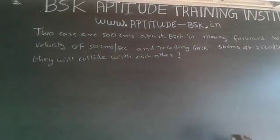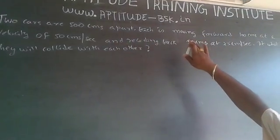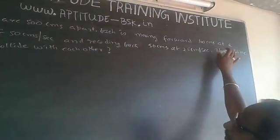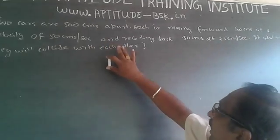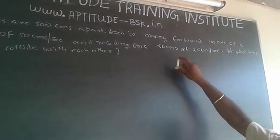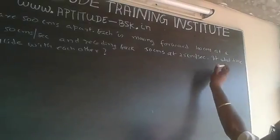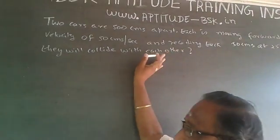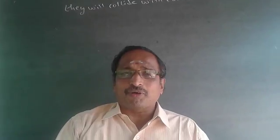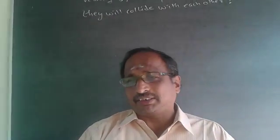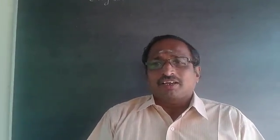The question is: two cars are 500 centimeters apart. Each is moving forward 100 centimeters at a velocity of 50 centimeters per second, and receding back 50 centimeters at 25 centimeters per second. At what time will they collide with each other? This is a question on speed, time, distance, and relative velocity.